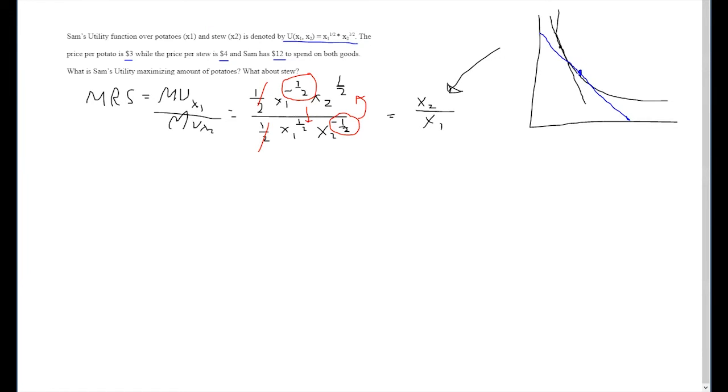What we're trying to do is optimize that given a budget constraint. In this way, we're trying to find the point where both the MRS and the slope of our budget line equate.